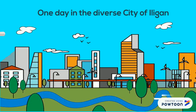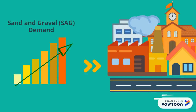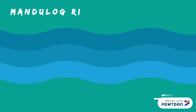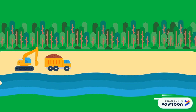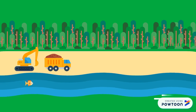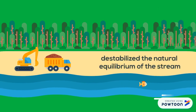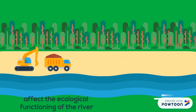One day, in the diverse city of Iligan, an increase in demand for sand and gravel aggregates for construction purposes has placed immense pressure on sand and gravel resources, with only the Mandeluk River as a direct main source of supply. Industrial sand and gravel mining operations practices overextraction of sand and gravel that have destabilized the natural equilibrium of the stream and affect the ecological functioning of the river.